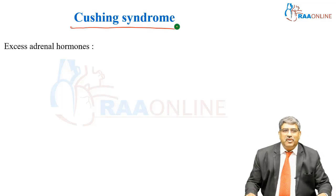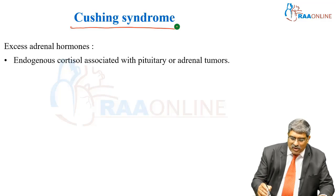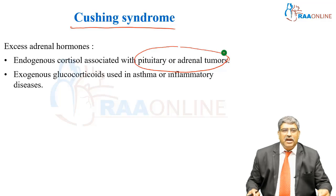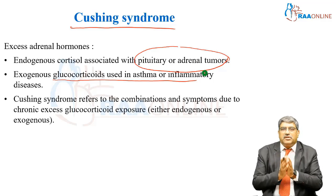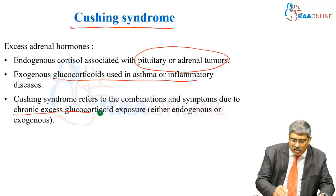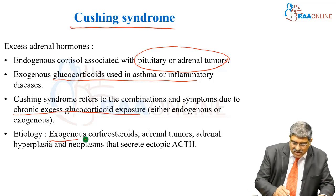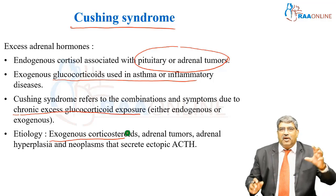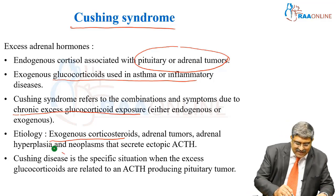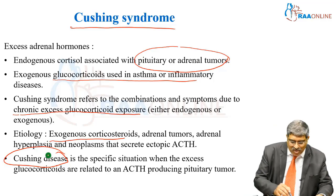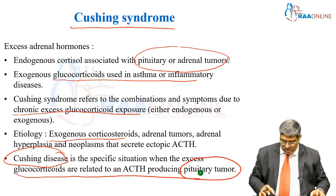Cushing syndrome results from excess adrenal hormone and can be either endogenous or exogenous. In endogenous Cushing, it is associated with a pituitary or adrenal tumor. In exogenous Cushing, glucocorticoids are used for treatment of asthma or inflammatory disorders. The etiology includes exogenous corticosteroids, ectopic ACTH secretion from a neoplasm, adrenal tumor, or adrenal hyperplasia. Cushing disease specifically refers to excess glucocorticoid release due to an ACTH-producing pituitary tumor.